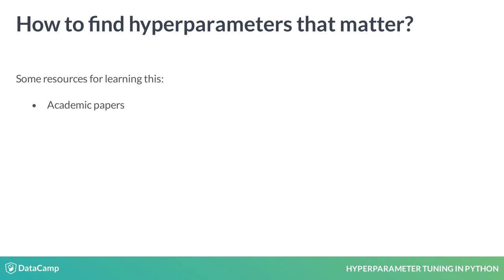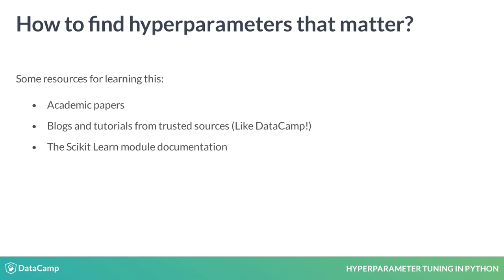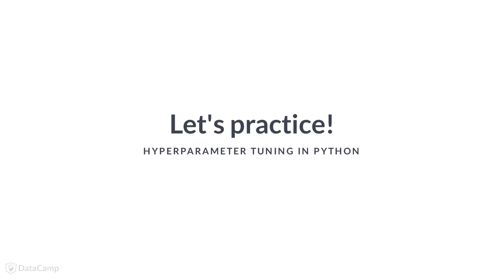For example, there are some great academic papers where people have tried many combinations of hyperparameters for a specific algorithm on many datasets — these can be a very informative read. You can also find great blogs and tutorials online and consult the scikit-learn documentation. Of course, one of the best ways to learn is just more practical experience. It is important you research this yourself to build your knowledge base for efficient modeling. Let's explore some hyperparameters.